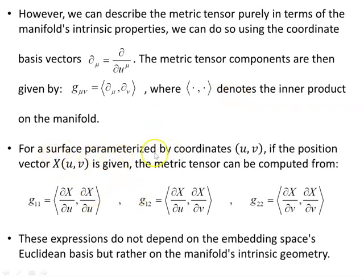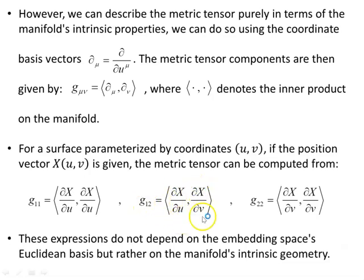For a surface parameterized by coordinates u and v, if the position vector X(u, v) is given, the metric tensor can be computed as: g₁₁ = ⟨∂X/∂u, ∂X/∂u⟩, g₁₂ = ⟨∂X/∂u, ∂X/∂v⟩, g₂₂ = ⟨∂X/∂v, ∂X/∂v⟩. Here ∂X/∂u and ∂X/∂v are the tangent vectors to the coordinate lines on this surface. These expressions do not depend on the embedding space's Euclidean basis but rather on the manifold's intrinsic geometry.